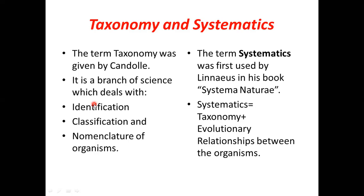Now, what is the word systematics? The systematics word was first used by Linnaeus. We have heard Linnaeus's name before in binomial nomenclature. Linnaeus used the systematic term in his book Systema Naturae. That book name is also very important. In Systema Naturae, Linnaeus used the term systematics.